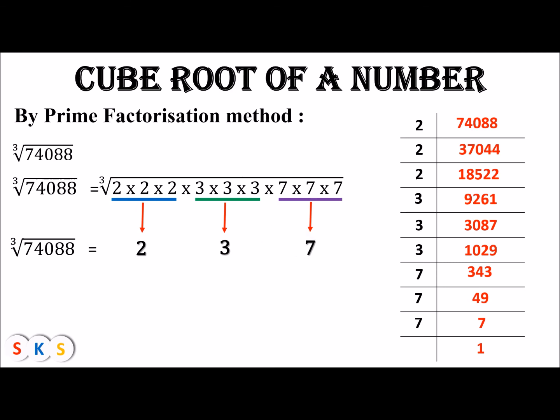From the first group we take two, from the second group we take three, and from the third group we take seven. Now we find the product of these numbers: two × three × seven equals 42. Hence the cube root of 74,088 is 42.